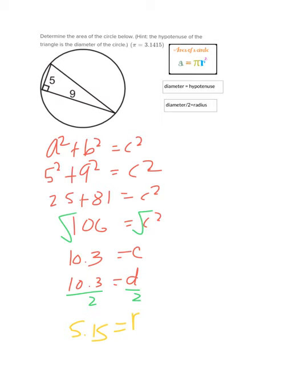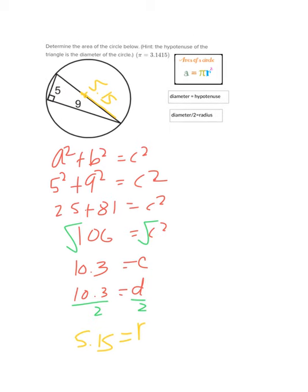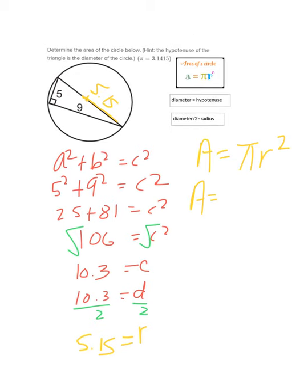So I finally have this. I have the radius. 5.15. And now I can calculate the area of the circle. Area equals Pi R squared. So area equals 3.14 times 5.15 squared. So area of this circle is equal to approximately 83.3 units squared.